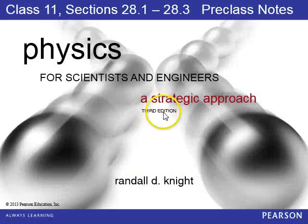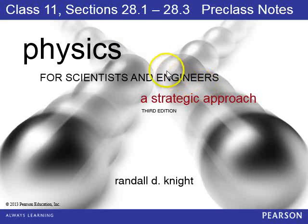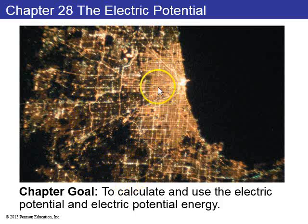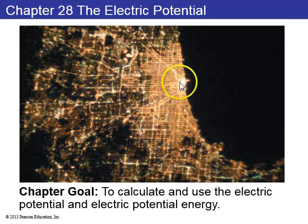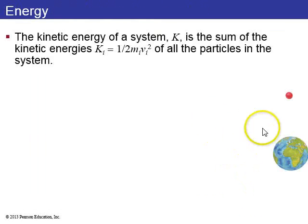In this class we've skipped chapter 27 on Gauss's law, and today I want to talk about chapter 28 which is on the electric potential. Here we have city lights seen from space, where millions of light bulbs are busy transforming electric energy into light and also heat.